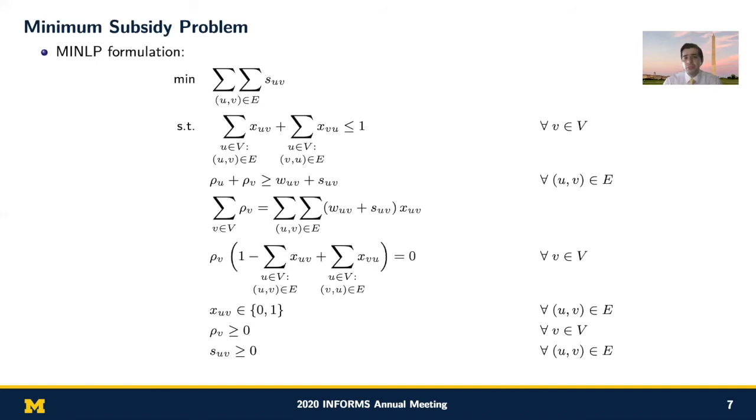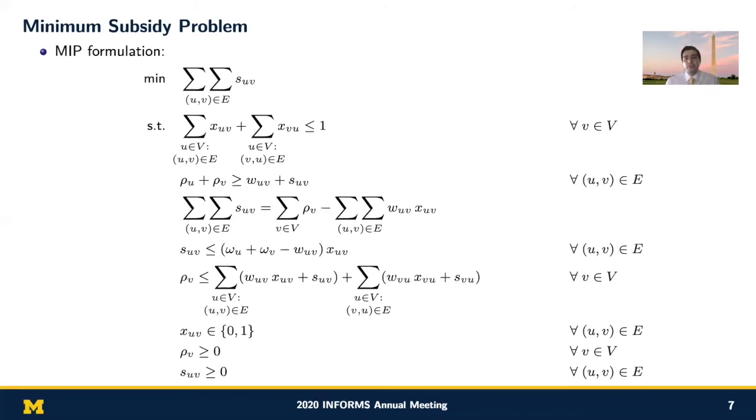The minimum subsidy problem can be formulated as a mixed-integer nonlinear program presented here. In this formulation, we introduce a vector of S sub-UV that can be added to the potential gain of every edge to make the system stable. Using a number of claims, we provided a tight mixed-integer program formulation as presented here. Unfortunately, it has already been shown that a special case of this problem with unit weights is NP-hard. So for solving large-scale instances of this problem, we developed a Lagrangian relaxation-based method.